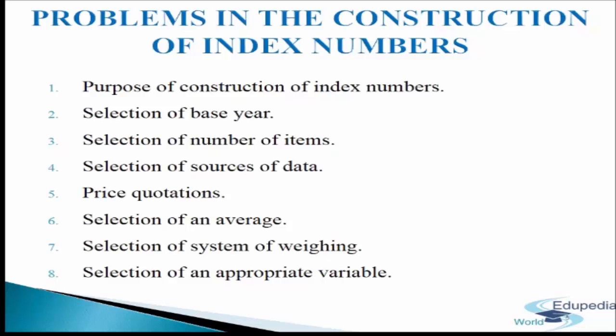Problem 1: Purpose of construction of index numbers. The purpose of construction of index numbers should be clear and rigidly defined. It is because there is no all-purpose index made. Every index number prepared has a specific use. If the purpose of the index number is not clearly defined, it will be a wastage of time and efforts. For example, to construct a consumer price index, we should take retail prices of various items including food, housing, education, clothing, etc. If by mistake we have taken wholesale prices, the purpose of construction of consumer price index will fail.